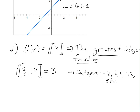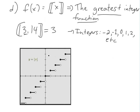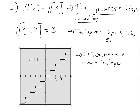If you graph the greatest integer function, it's discontinuous at every integer. For example, at values like 1.5 you get 1, and as you approach 2 from below — say 1.999 — the value is still 1, but exactly at x=2 it jumps to 2.